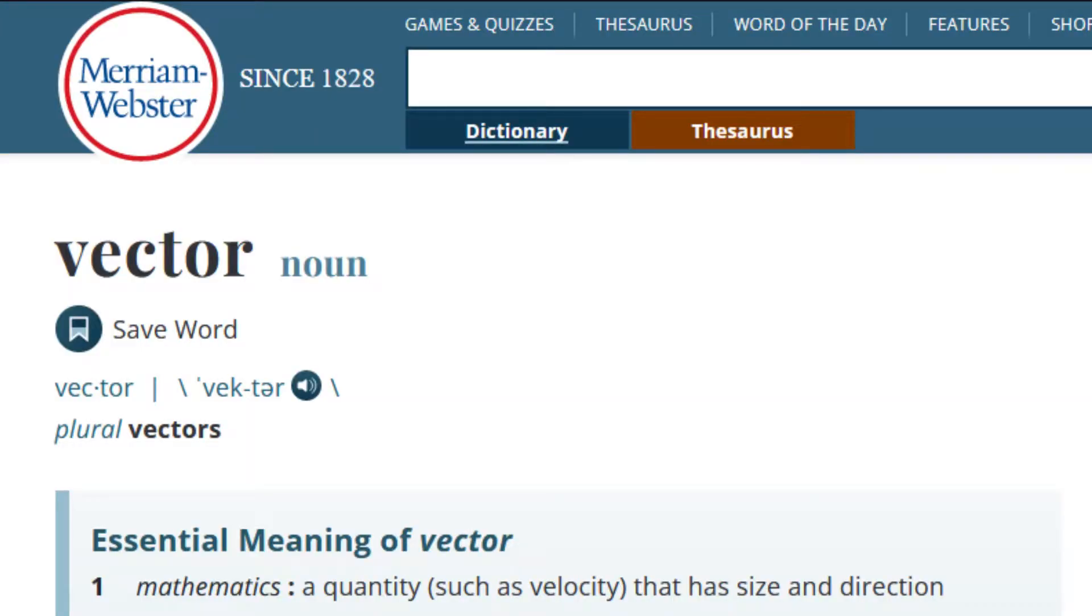Merriam-Webster's dictionary defines a vector as a quantity that has size and direction. The example given is velocity, which is also where I normally start this discussion.